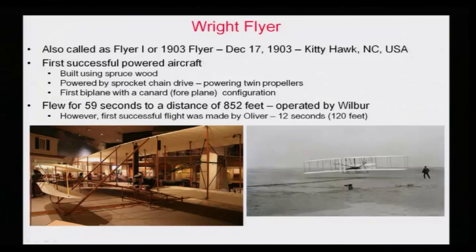You can see that it is actually a biplane. A biplane means you have two aerofoils connected, highlighted here in red, and the propeller is at the back. You can also see that this aircraft has two foreplanes or canards in the front, which are used for controlling the direction.